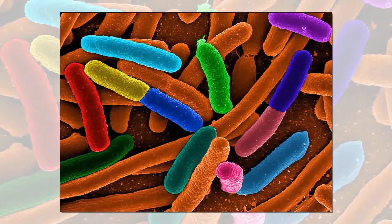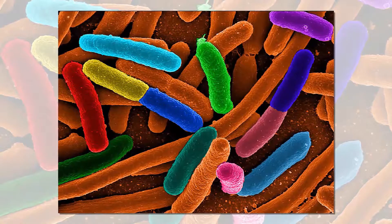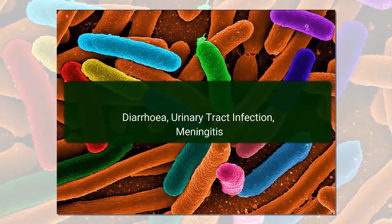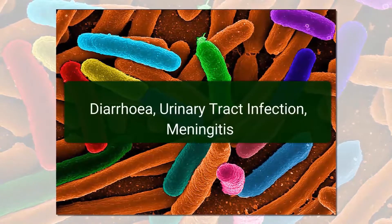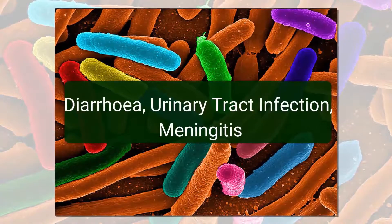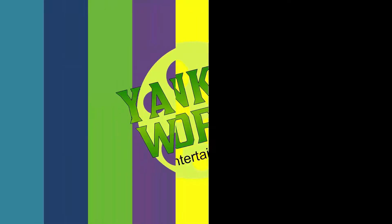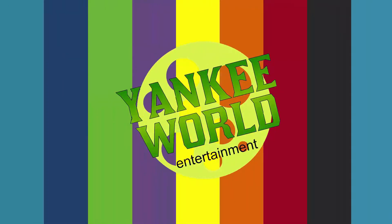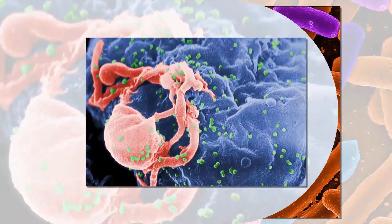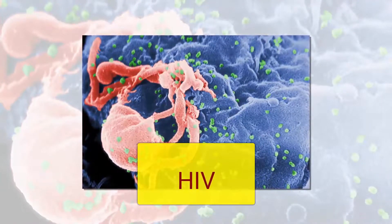One of the rare strains of E. coli results in bleeding in the intestine. Other illnesses caused by this bacteria are diarrhea, urinary tract infection, and meningitis.